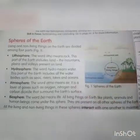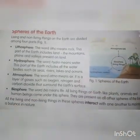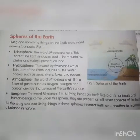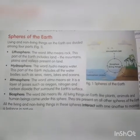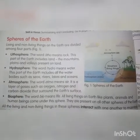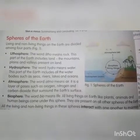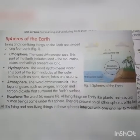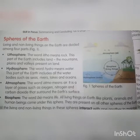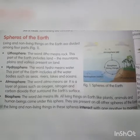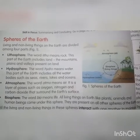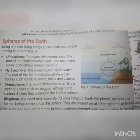Let us take information on each sphere one by one. The word 'litho' means rock. The lithosphere is the part of the earth that includes land — the mountains, plains, and valleys present on the land.